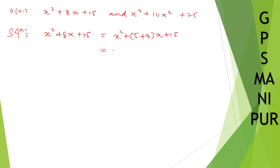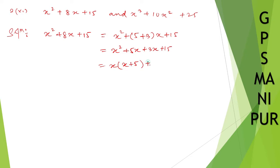So x squared plus 5x plus 3x plus 15. Taking x common from the first two terms gives x(x plus 5), and taking 3 common from the last two terms gives 3(x plus 5).